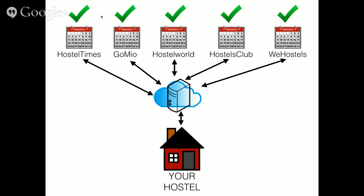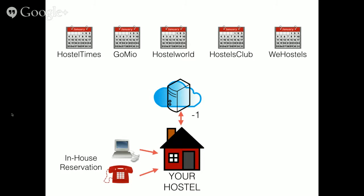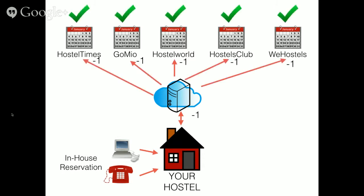So the channel manager is designed to solve that problem. It creates a communication link between each of your booking sites, and each of these booking sites are referred to as channels — distribution channels. So now each of these places are all kept in sync. On the basic level, if you receive a reservation in-house and you report that to just one place — your channel manager — say, I've just got a reservation for one person on the 15th, reduce my inventory available to be booked by one, the channel manager will immediately communicate that to all of your channels at once. So they're all in sync.